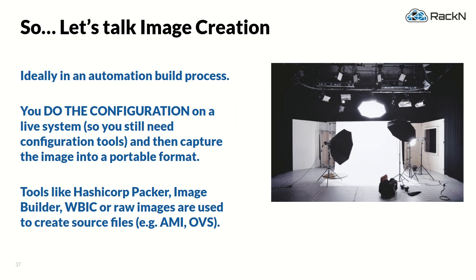If you're thinking about this, the first question is: how do I create that image? You still have to do the configuration — there's no free lunch. In your build pipeline, you boot a machine, do the configuration, and then rip an image from that configuration to save it. Some popular tools: HashiCorp Packer seems to be one of the top, there's Image Builder out of the OpenStack community, and Windows has their own. These images are in formats that can be transferred around — AMIs for Amazon, VHDs, OVS, or raw images for physical machines. They're highly compressed so they're actually pretty small.